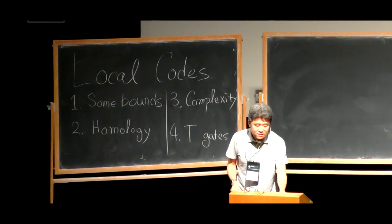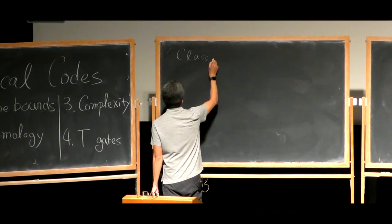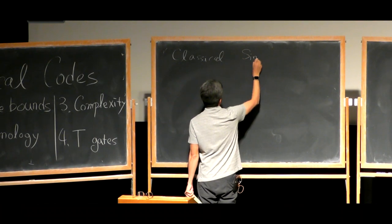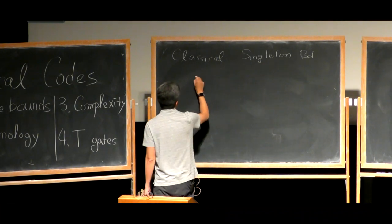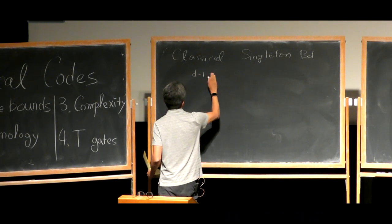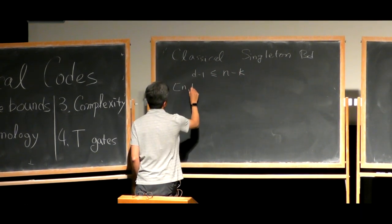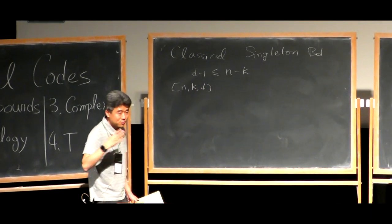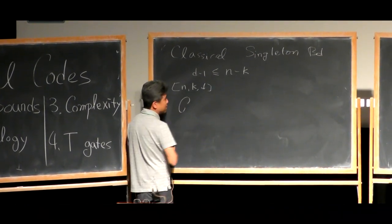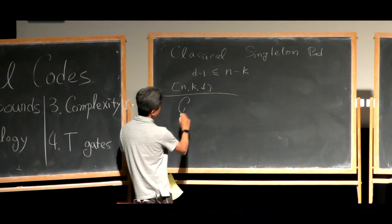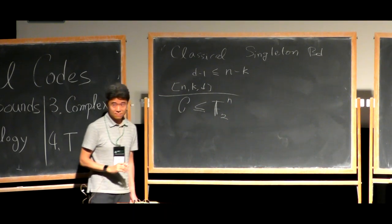Let's start with the classical Singleton bound. It's a crude bound. 'Singleton' is a name. There are more general versions, but let me focus on linear codes. A linear code is a linear subspace in your binary vector space. That's it — that's the linear code.